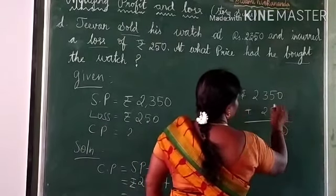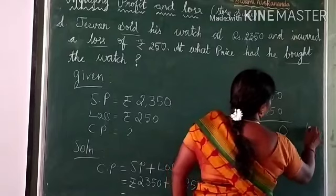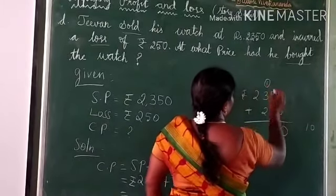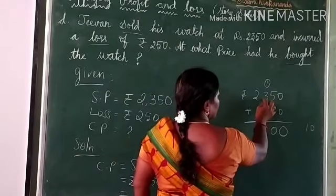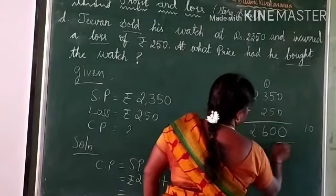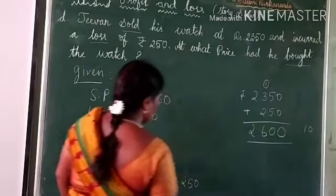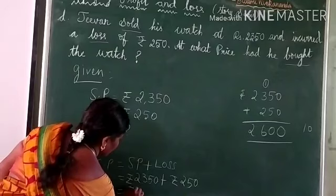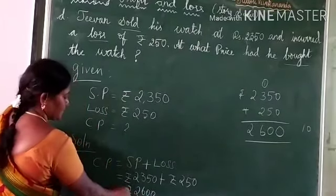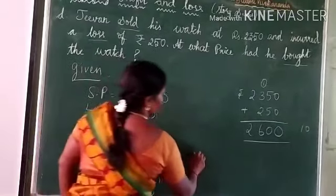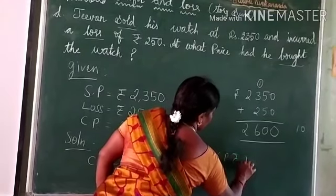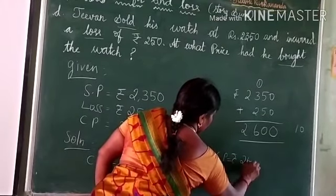0 plus 0 is 0. 5 plus 5 is 10, write 0 and carry 1. Then 1 plus 3 is 4, and 4 plus 2 is 6. So the answer is rupees 2600. Rupees 2600 is the cost price. Answer: cost price equals rupees 2600.